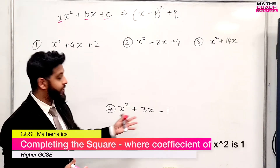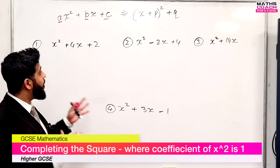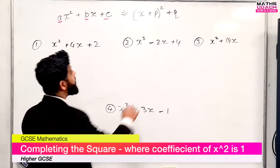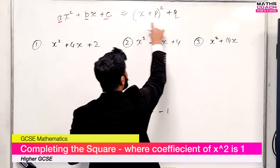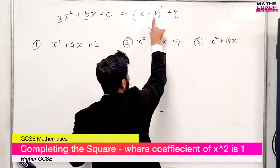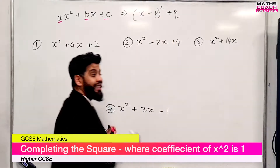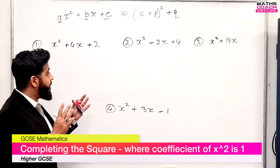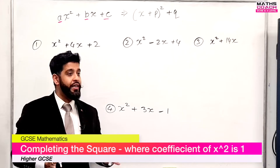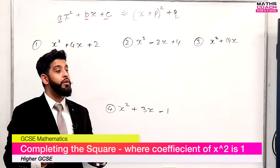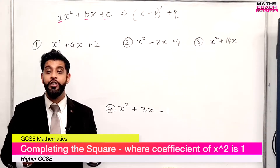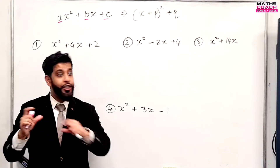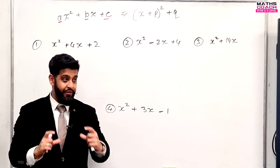We've got four different types of expressions and what we want to do to all of these expressions is complete the square. We want to put them into a form like this where we have a value for P and a value for Q. We complete the square when we can't use our traditional factorizing, where we have our double brackets and use our AC or the cheat method to factorize.